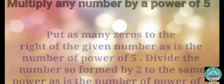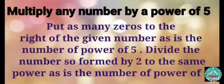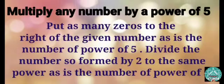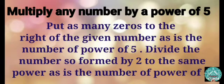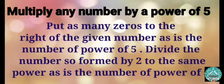How to multiply any number by a power of 5. Put as many zeros to the right of the given number as is the number of power of 5. Then divide the number so formed by 2 to the same power as is the power of 5.